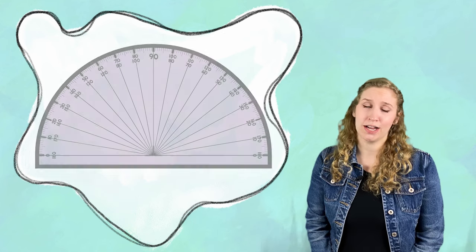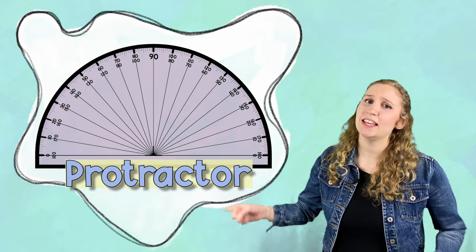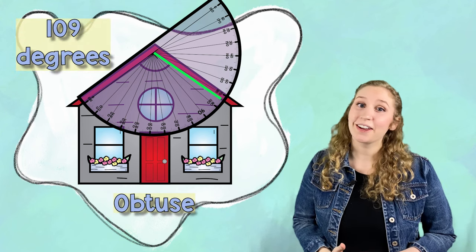That's where the protractor comes in handy. A protractor can measure the exact degree. Let's look at this one right here. This angle, when you look at it, you might not be completely sure what measurement it is. But we use an exact tool like a protractor to make sure we're classifying it correctly.